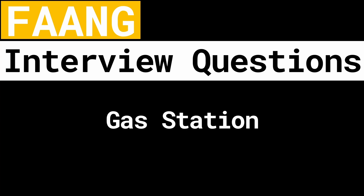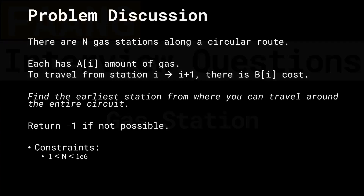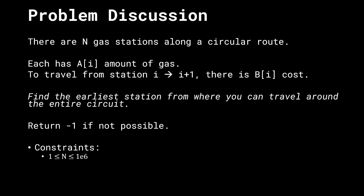Hello everybody and welcome back. Let's talk about the problem Gas Station. Here's the problem setup: we're given N gas stations in total which lie along a circular route. Each of them has a[i] amount of gas present, and to travel from station i to station i+1 there is some cost associated with it, given by b[i]. Note that a[i] and b[i] are two elements from arrays a and b, both of size n.